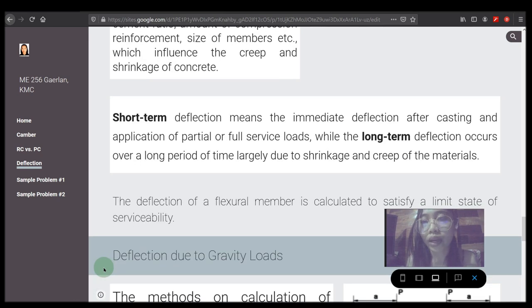Short term or instantaneous deflection at transfer is due to the initial prestressing force and self-weight without the effect of creep and shrinkage of concrete. Short term deflection of prestressed members are governed by the bending moment distribution along the span and the flexural rigidity of the members. It occurs immediately upon the application of the load caused by elastic deformation of the concrete in response to the loading.